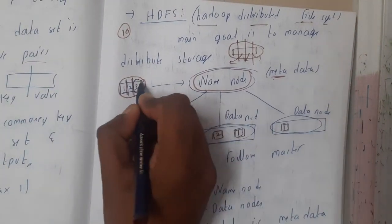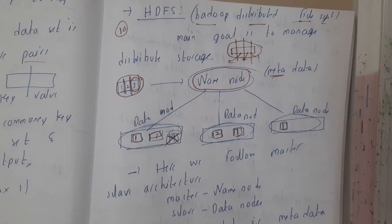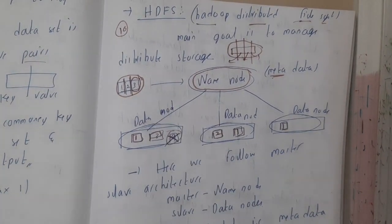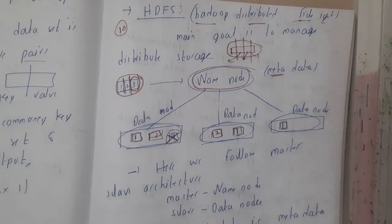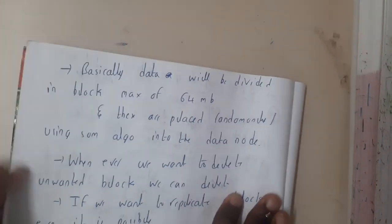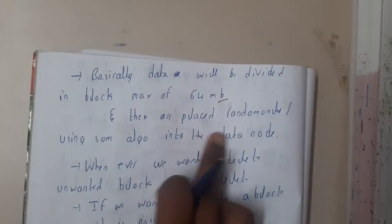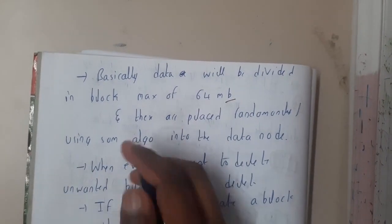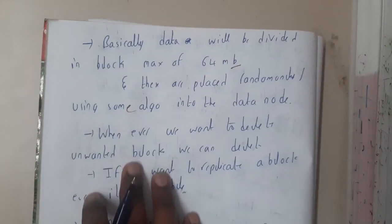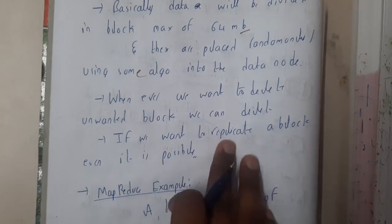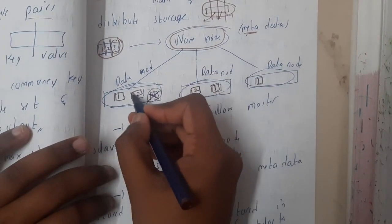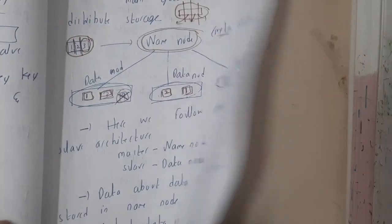Each block has a maximum size of 64 MB. The data is divided into these 64 MB blocks and placed into data nodes using an algorithm. For big data scenarios with thousands of GB, you will get a very large number of blocks. You can delete unwanted blocks, and you can also replicate them — for example, if a chunk was pushed to only one node, you can replicate it to more nodes.